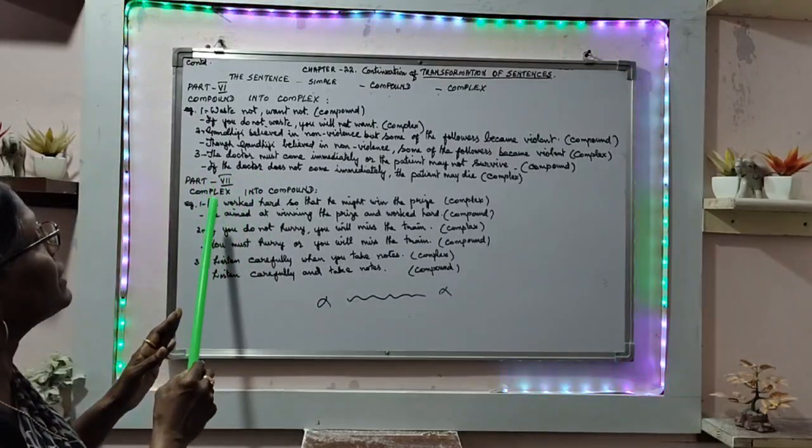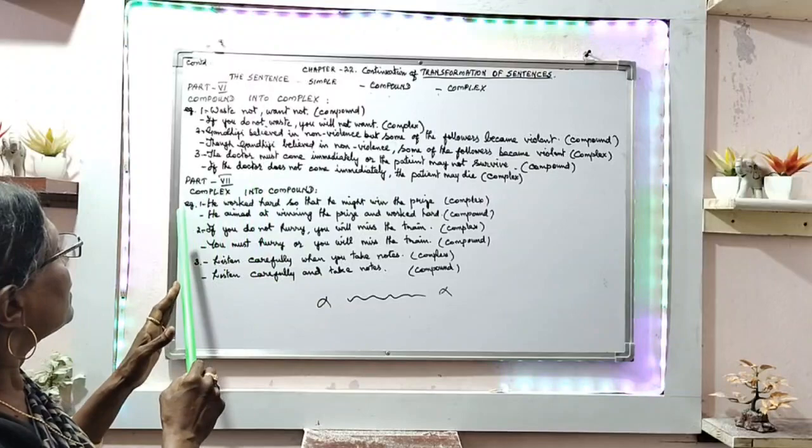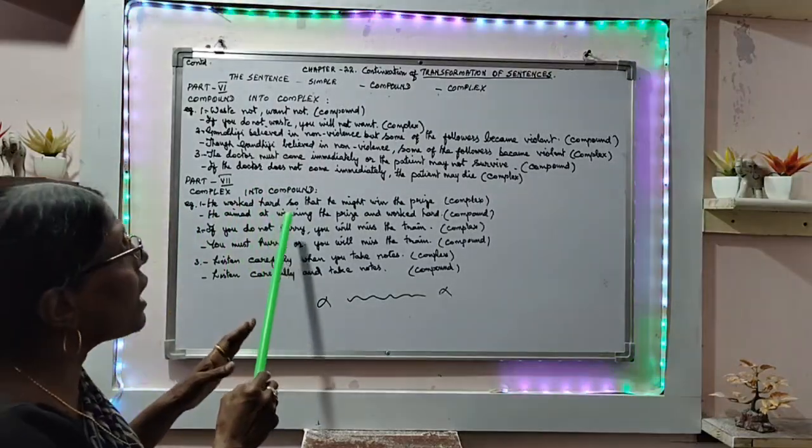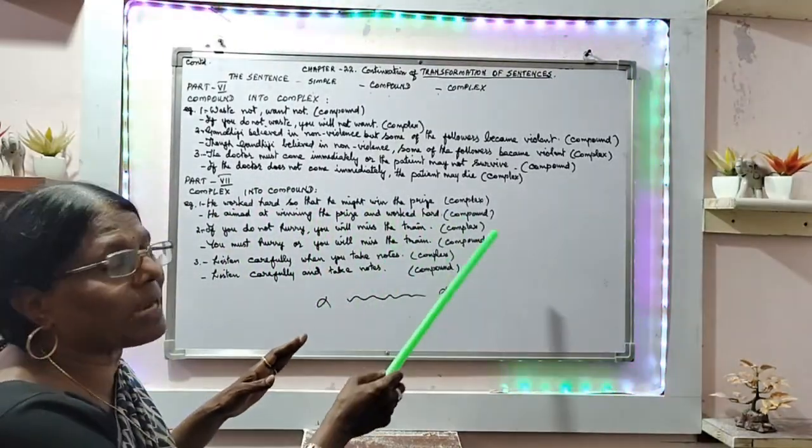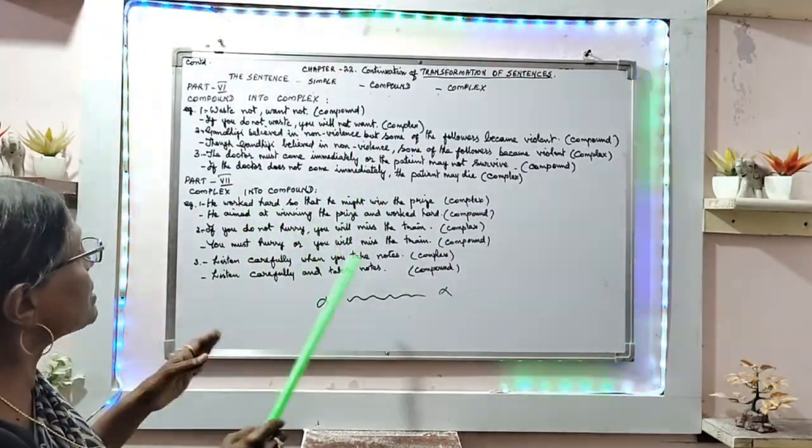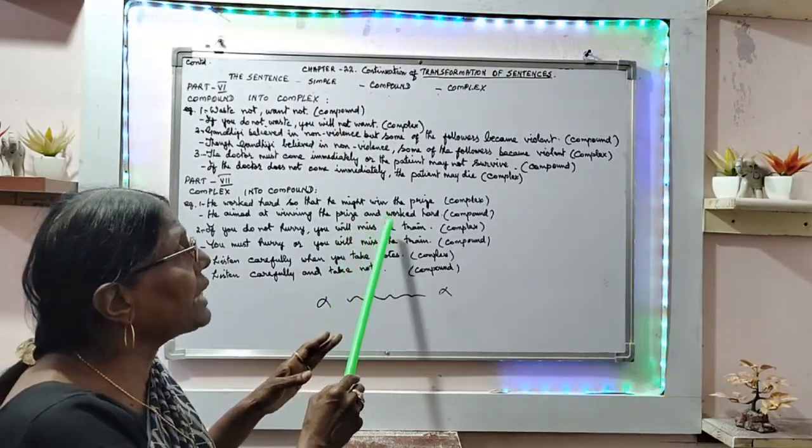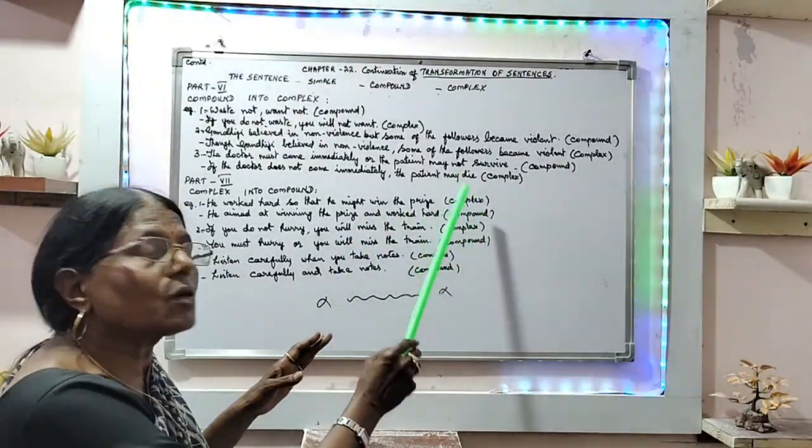Next is part 7, that is complex sentence into compound sentence. Example: he worked hard so that he might win the prize. That is complex sentence. Changing into compound sentence: he aimed at winning the prize and he worked hard. That is compound sentence.